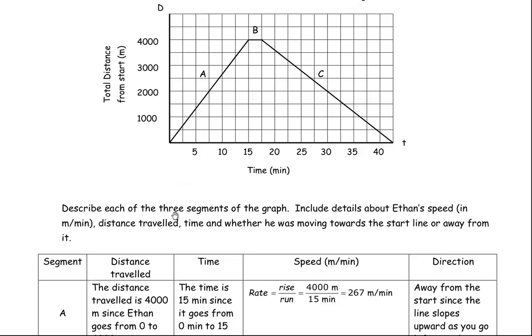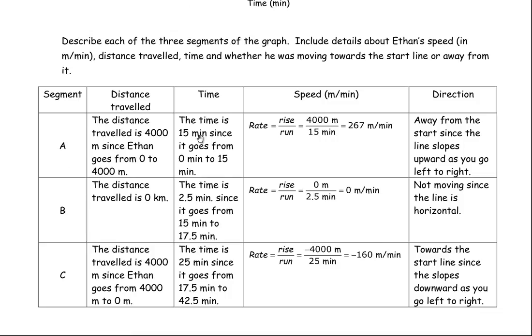It says, describe each of the three segments of the graph, so the A segment, the B segment, and the C. Include details with Ethan's speed in meters per minute, the distance traveled, the time traveled, and whether he was moving towards the start line or away from it. So basically you have to fill out this table. So I'm going to do all of A first, and then B, and then C.